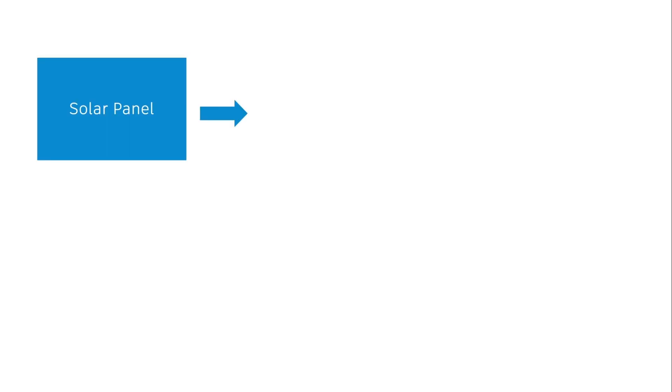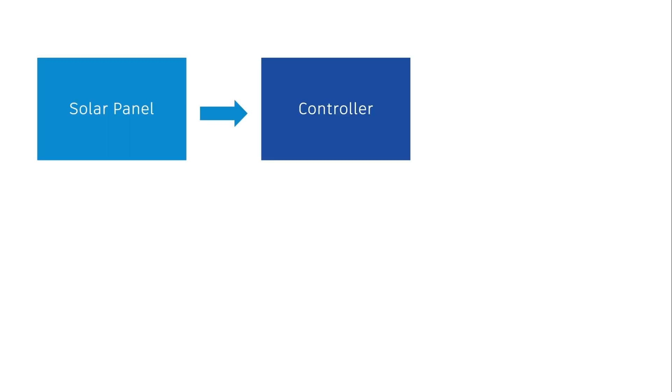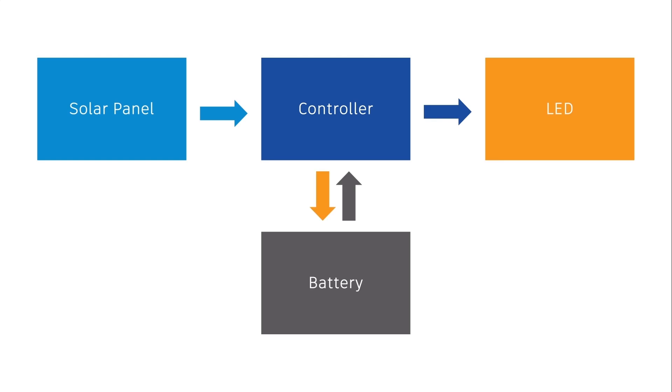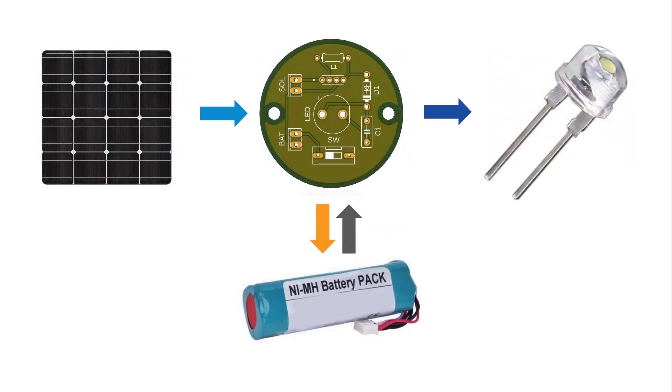The solar lamp is a standalone solar photovoltaic system. It contains four basic components: first the solar panel, controller, battery, and LED. The solar panel converts solar energy into electrical energy. The controller has two functions: to charge the battery during the daytime and drive the LED during the night. The battery stores the energy generated by the solar panel.